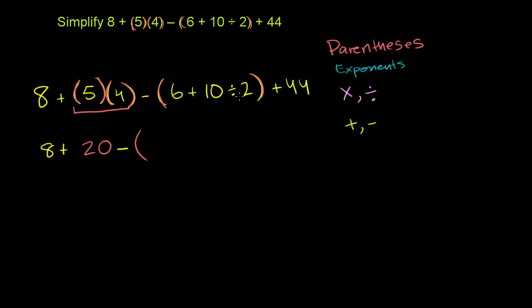Now let me write the next parenthesis right there, and then inside of it we need to evaluate this first. So let me close the parenthesis right there, and then we have plus 44. So what does this thing right here evaluate to, this thing inside the parentheses?